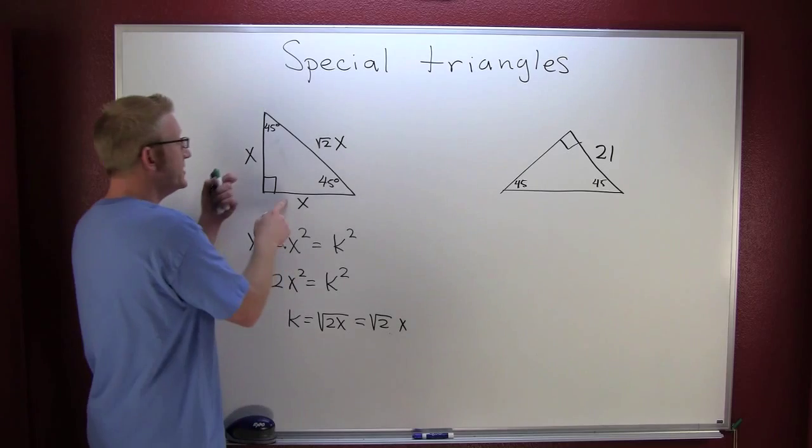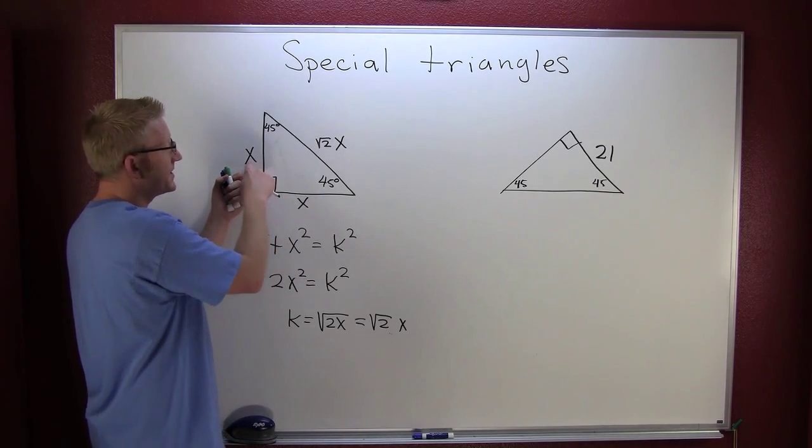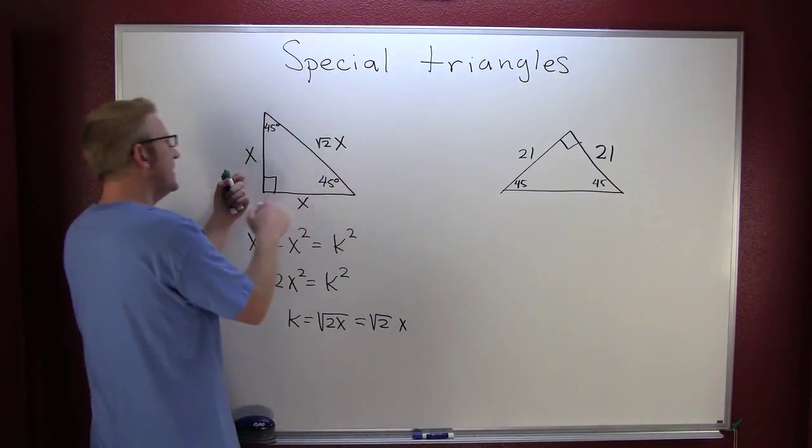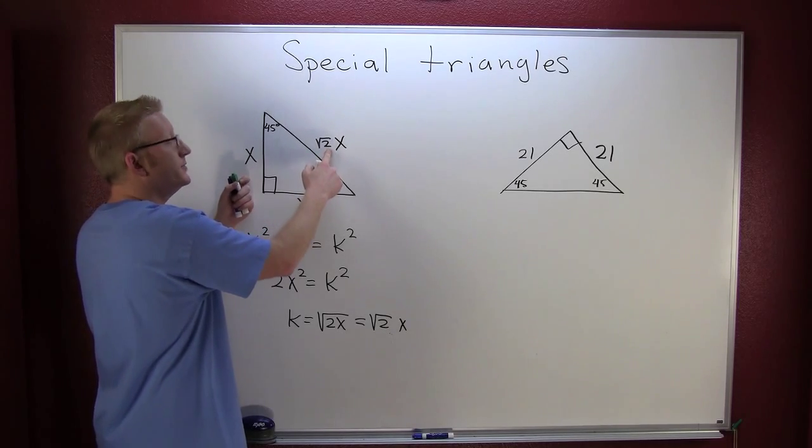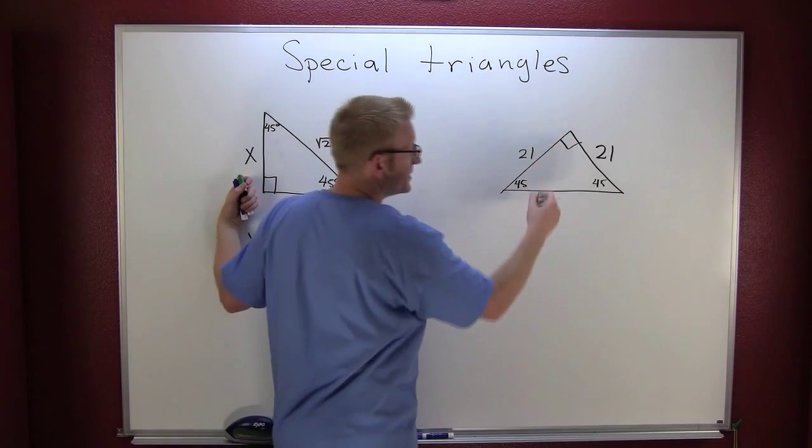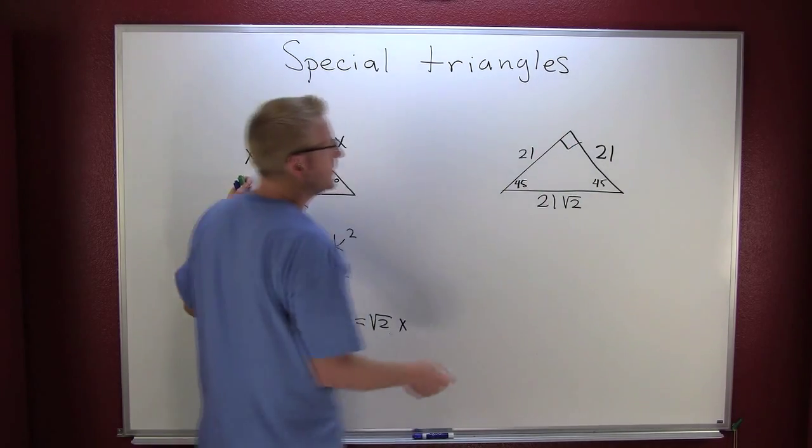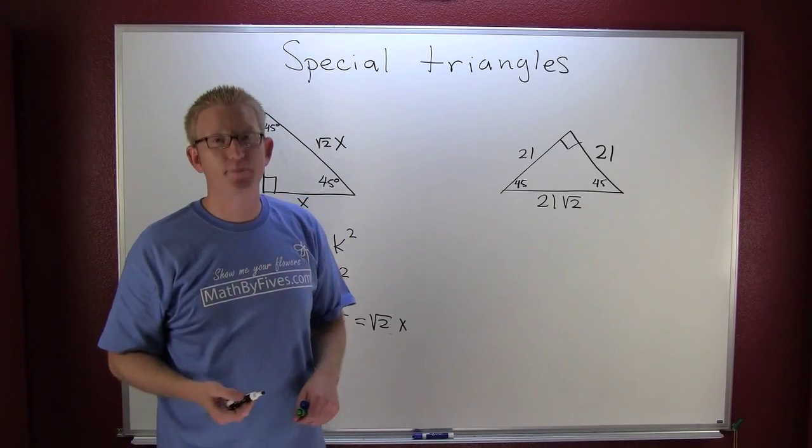In a 45-45-90 triangle we see that our short legs are the same length. So if this is x and that's x, that makes this side also 21. And then our third side, our hypotenuse, is going to be root 2 times x. So this is going to be 21 root 2. The numbers are ugly but they're yours and that's your special triangle.